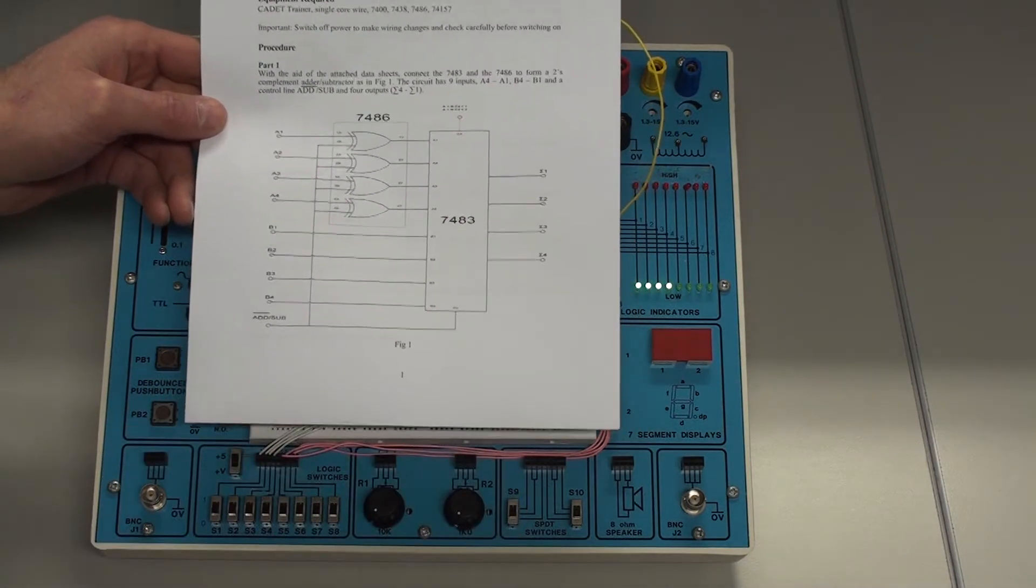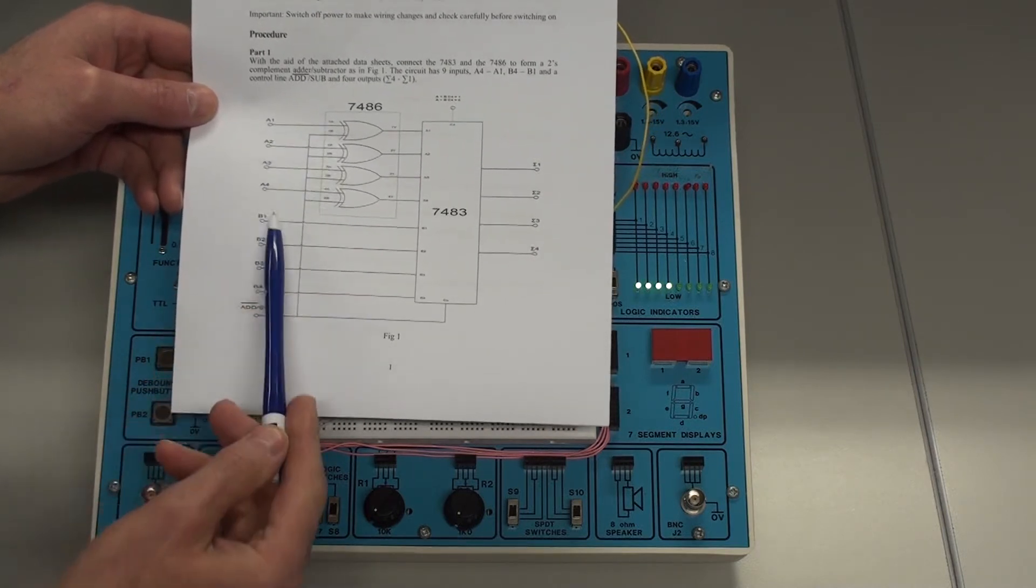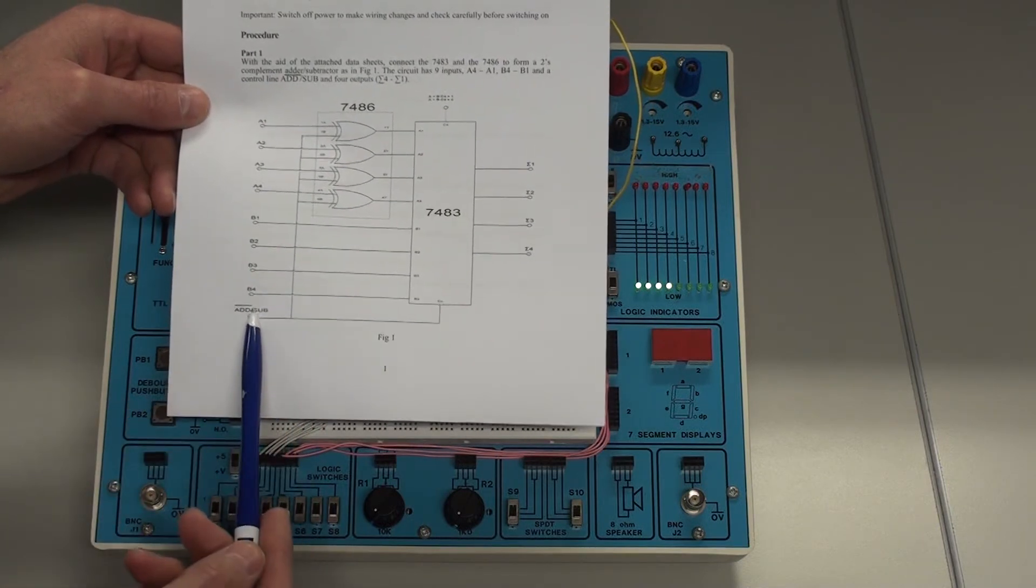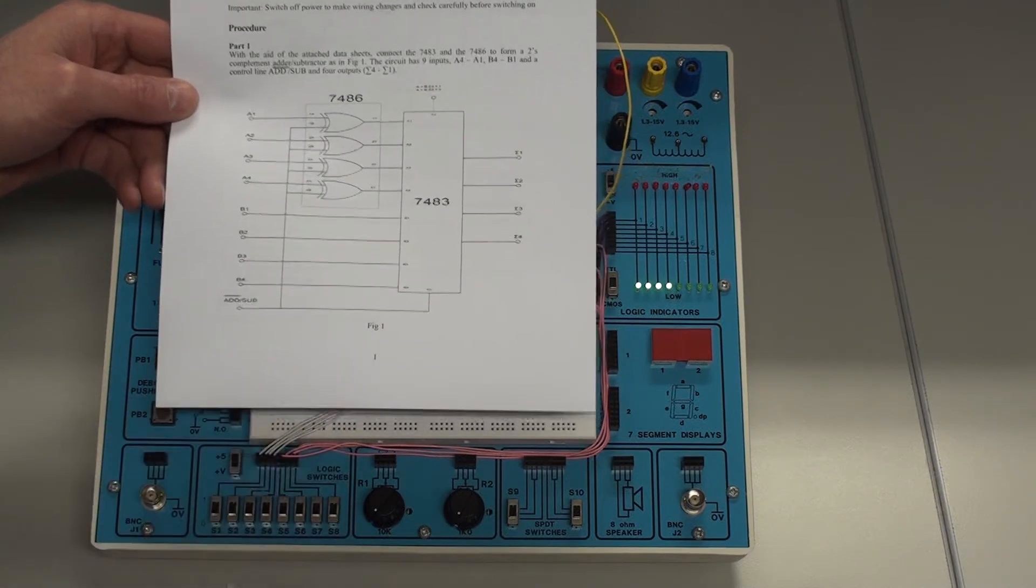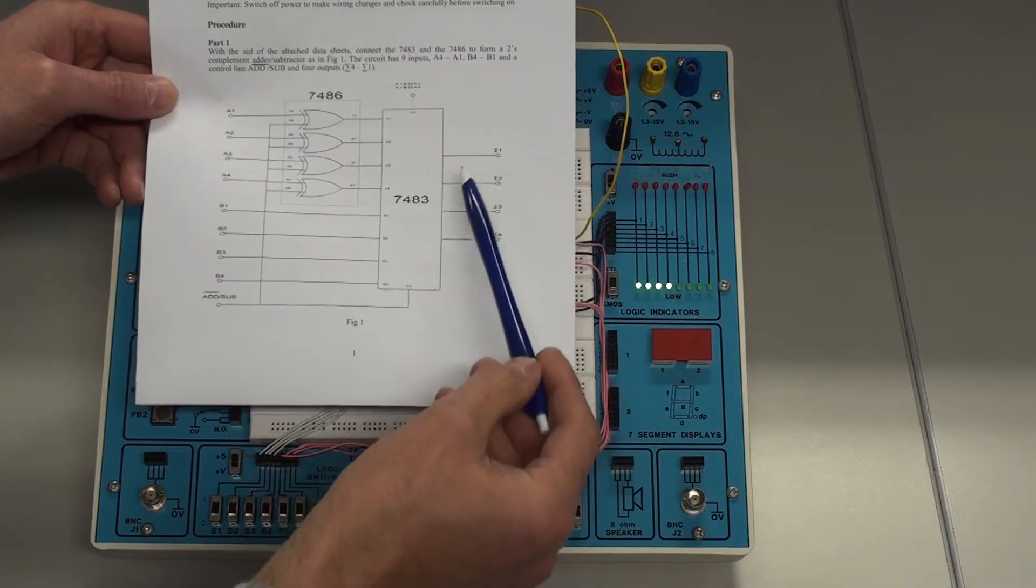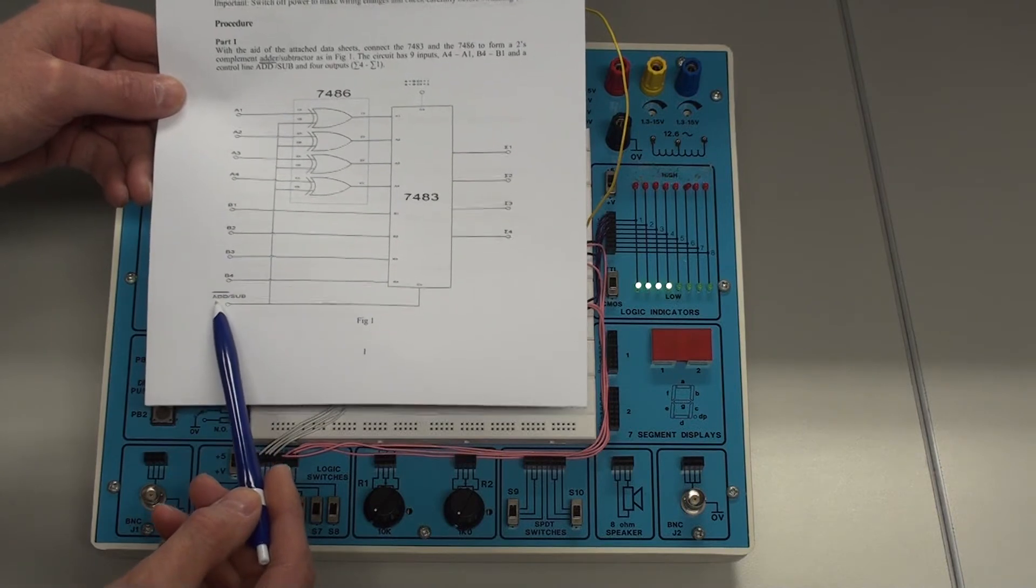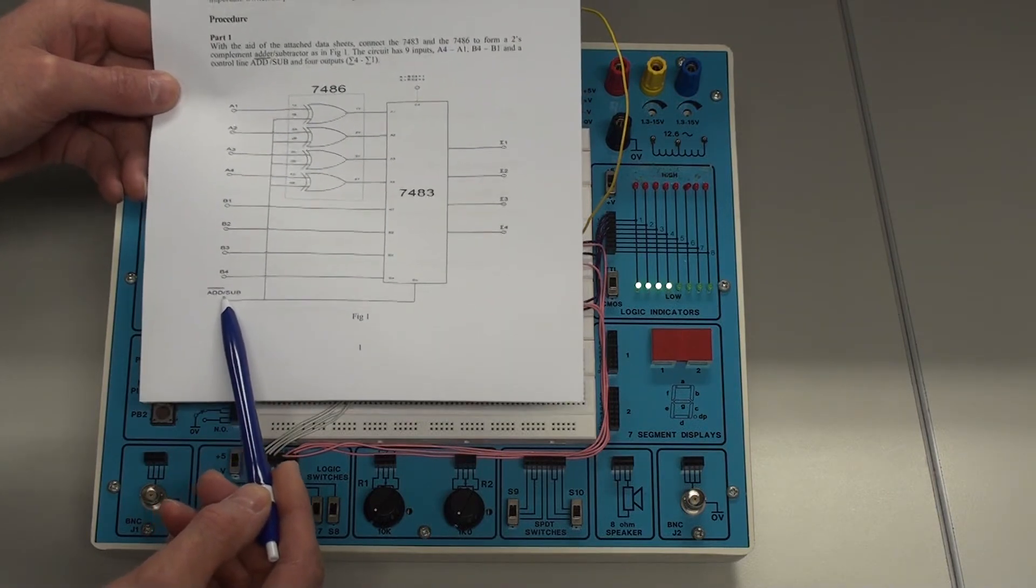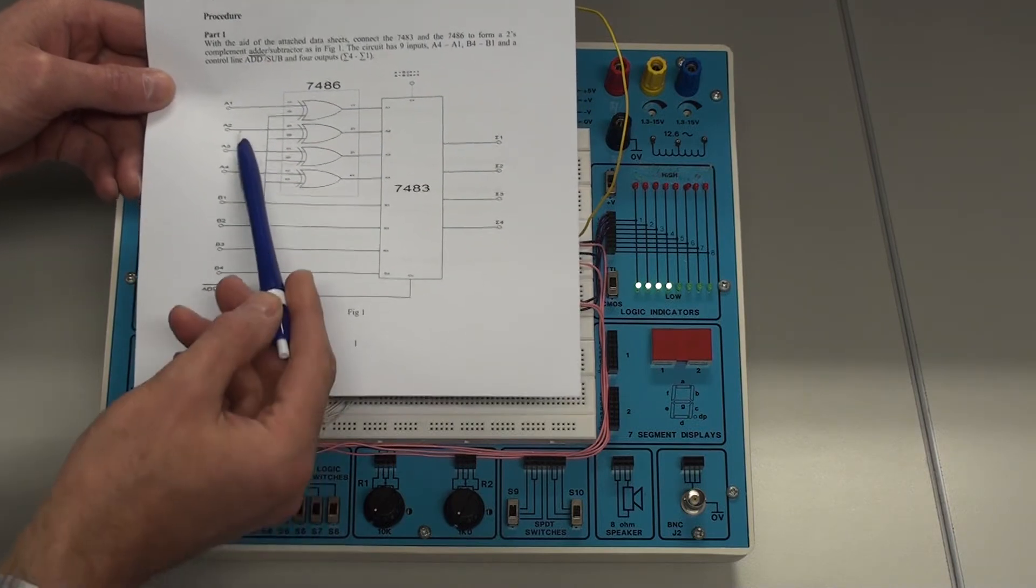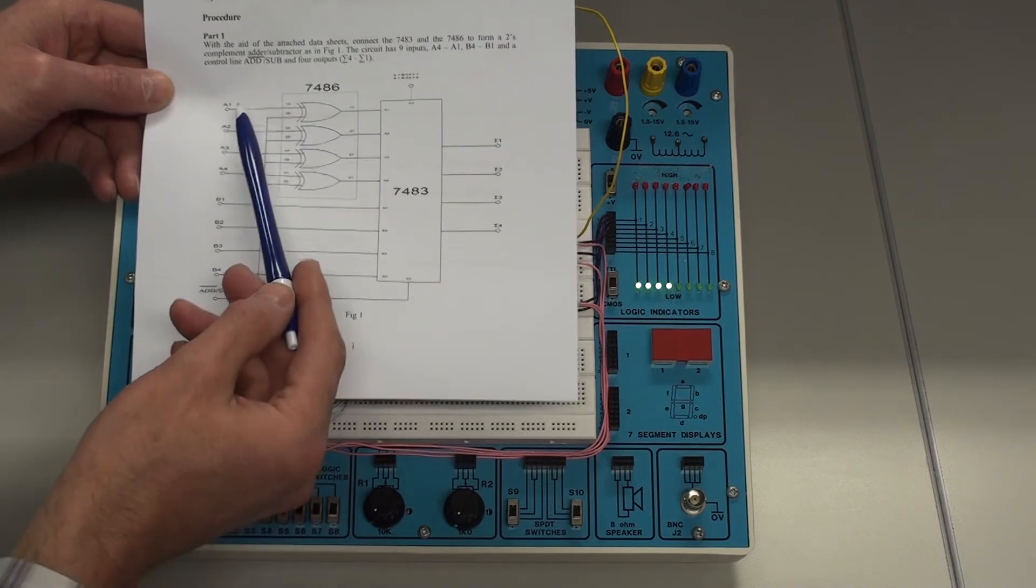So you're given that and here we have 4 bits. We're going to add two 4-bit numbers, A1 to A4 and B1 to B4, or subtract two 4-bit numbers and the result will be provided here. And the control line here is active low for add, which means when this line here is zero we're going to add these two numbers together, and when it's high we're going to subtract A from B.